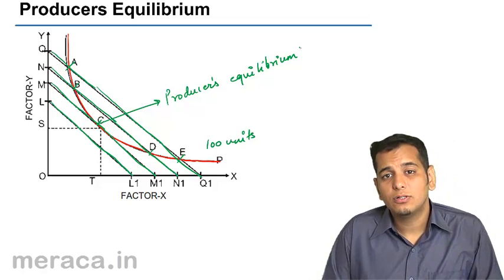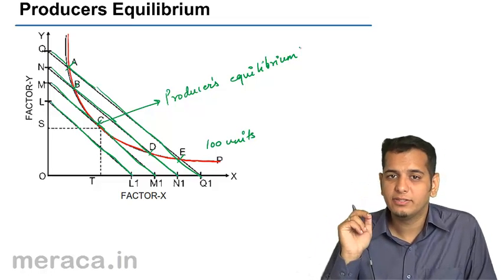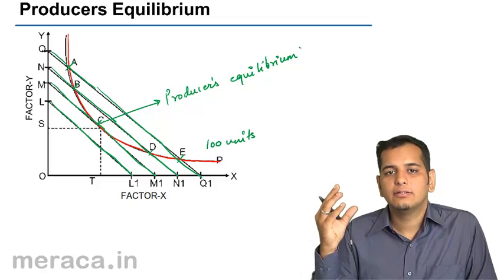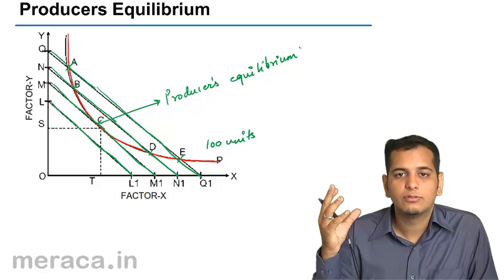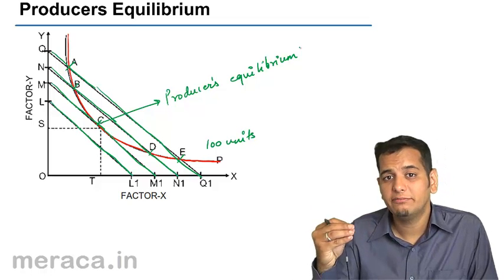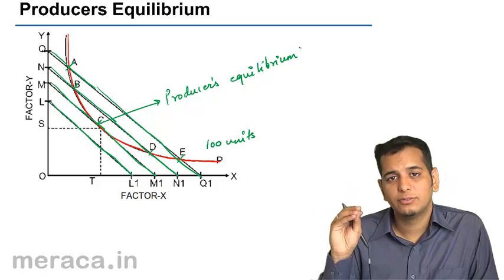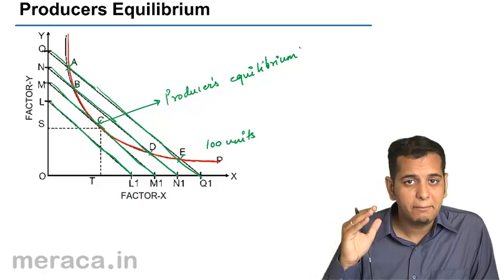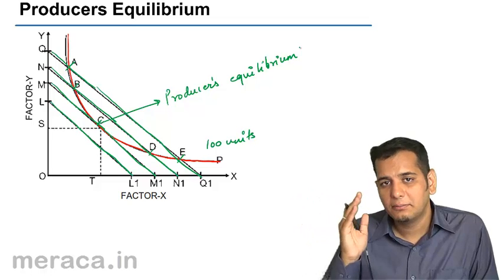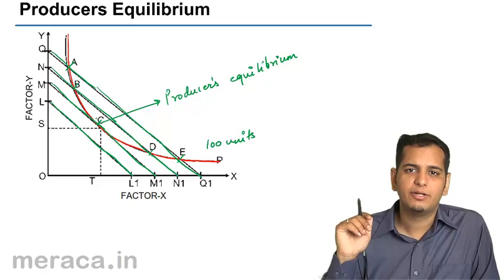This concept is similar to consumer's equilibrium, where we had various indifference curves and a budget line placed on the axis. The consumer chose that level of combination of goods which was within his budget and which would maximize his satisfaction level. In the same way, the producer tries to produce the output at the minimum cost. The consumer tries to get the maximum level of satisfaction within his budget; the producer tries to produce at a minimum cost. When he reaches the minimum cost, it is called producer's equilibrium.